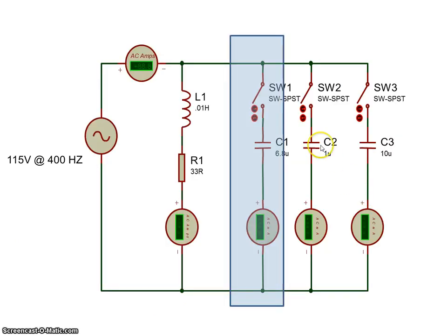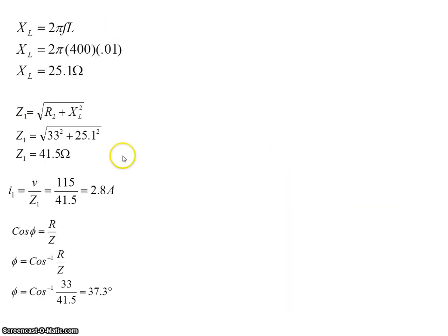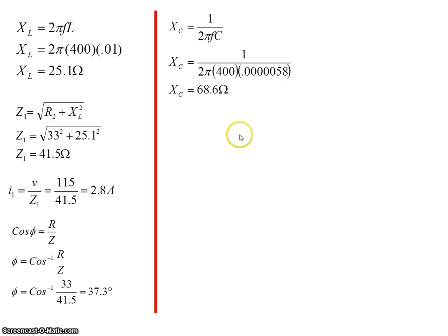Let's change the capacitor value. So I'll put in the 6.8 microfarad capacitor instead. All those calculations are the same for the inductive side. The capacitive side, we just change the value of C. So XC now becomes 68.6, and the capacitive current comes to 1.68 amps.